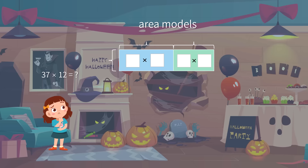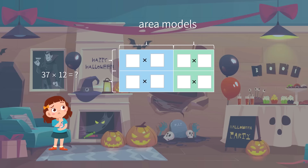Let's take a look at the factors. They both have two digits. Thus, we need to divide both into two parts. This brings one more role to our area model.